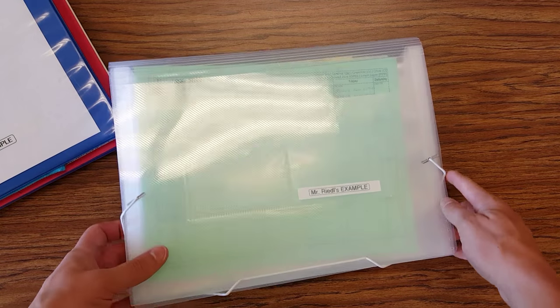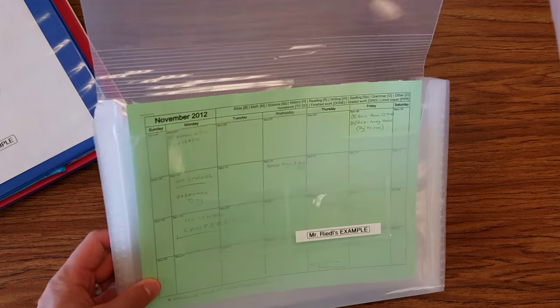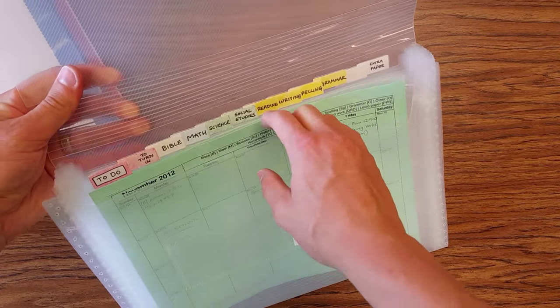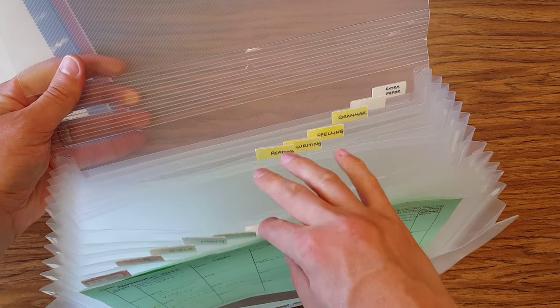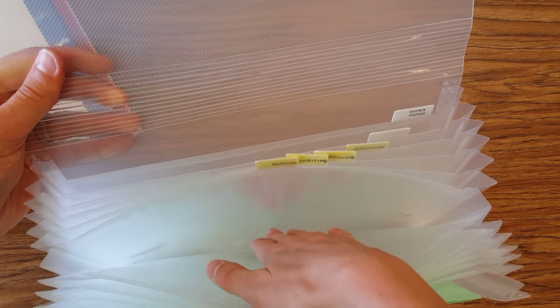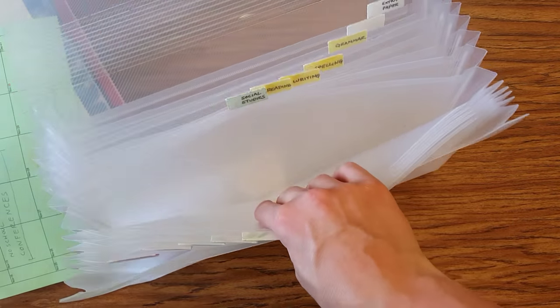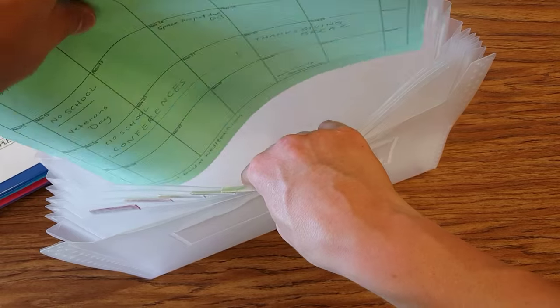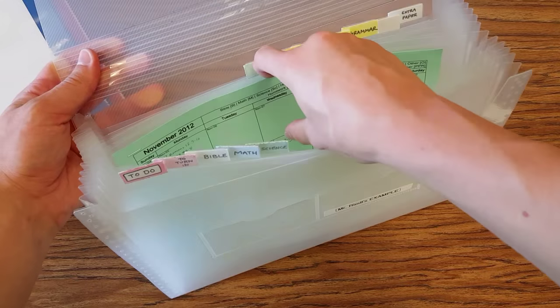Now, on to accordion folders. These are set up a little differently than binders. They open up in a typical accordion style where you can see all the tabs on the top and choose which section you want to slide your papers into. I would say that that's probably the biggest advantage of accordion folders is that you can easily slide papers right in and then close it and then slide papers right out when you want to get something quickly and easily.